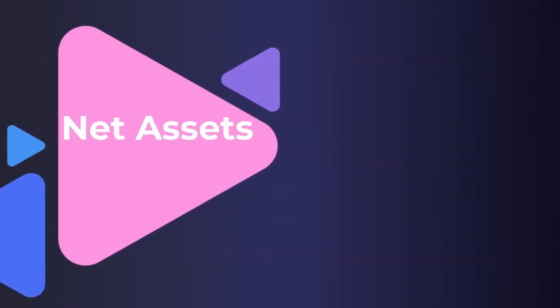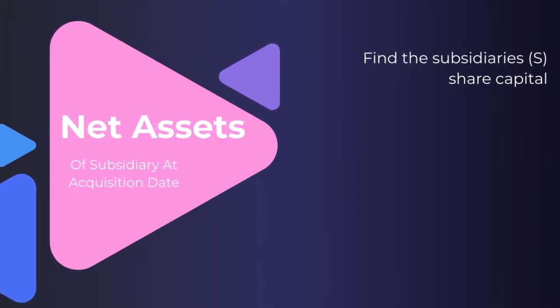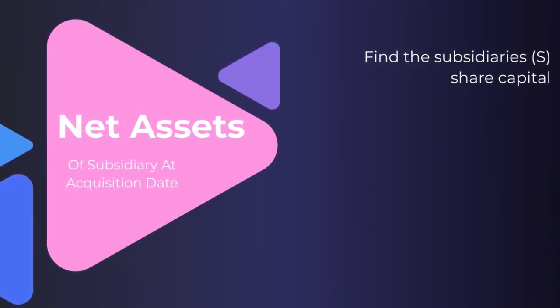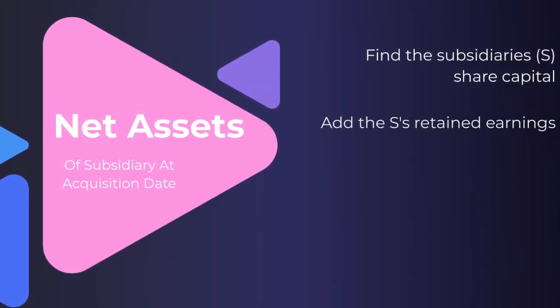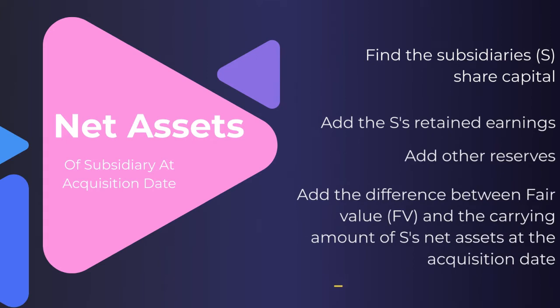Let's take a closer look at how to work out the net assets of the subsidiary at the acquisition date. We find the subsidiary's share capital on the statement of financial position, add the subsidiary's retained earnings, add any other reserves, and then add the difference between the fair value and the carrying amount of the subsidiary's net assets at the acquisition date.